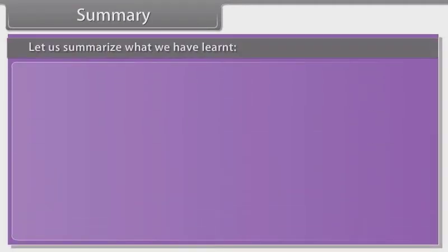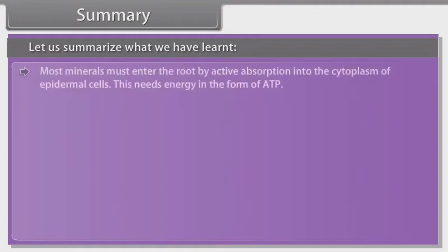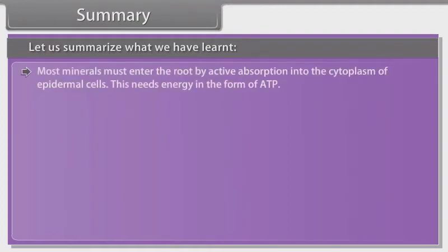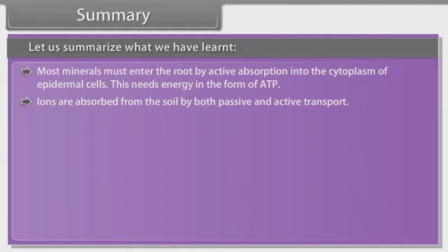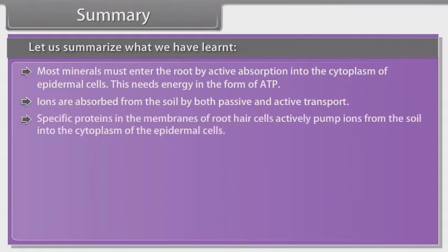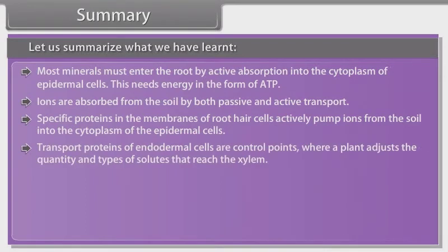Summary. Let us summarize what we have learnt. Most minerals must enter the root by active absorption into the cytoplasm of epidermal cells. This needs energy in the form of ATP. Ions are absorbed from the soil by both passive and active transport. Specific proteins in the membranes of root hair cells actively pump ions from the soil into the cytoplasm of the epidermal cells.